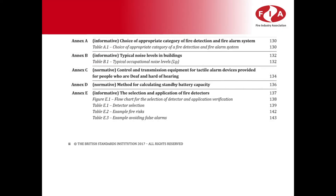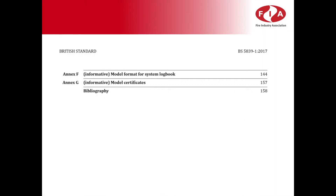The final part of the Code of Practice details annexes A through to G. Annex A provides information on the choice of appropriate category of fire detection and fire alarm system. Annex B details information relating to the typical noise levels within buildings. Annex C relates to the control and transmission equipment for tactile alarm devices provided for people who are deaf and hard of hearing. Annex D details the method for calculating the standby battery capacity. Annex E relates to the selection and application of fire detectors. Annex F provides detailed information on the format for the system logbook, and Annex G details information relating to the model certificates.